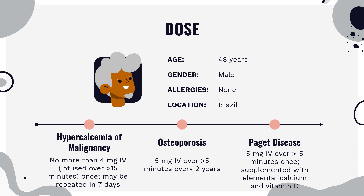Osteoporosis — reduction in incidence of fractures (hip, vertebral, and nonvertebral osteoporosis-related fractures). Prevention in postmenopausal women: Reclast, 5 mg, over 5 minutes, every 2 years. Treatment in men and postmenopausal women: Reclast, 5 mg, over greater than 15 minutes, every year.